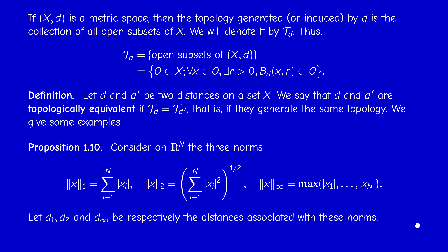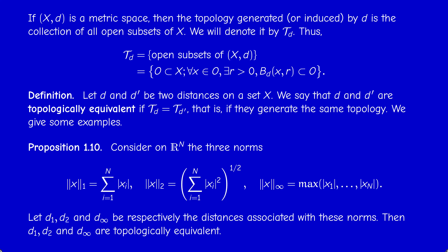These three norms generate distances: norm 1 generates d₁ where d₁(x,y) = ‖x−y‖₁, d₂(x,y) = ‖x−y‖₂, and similarly for d∞. We now have three distances on ℝⁿ, and we claim that these three distances are topologically equivalent — meaning they have the same collection of open sets, not the same distance.